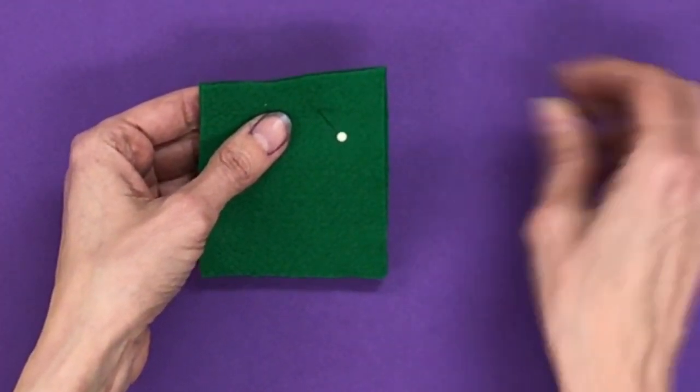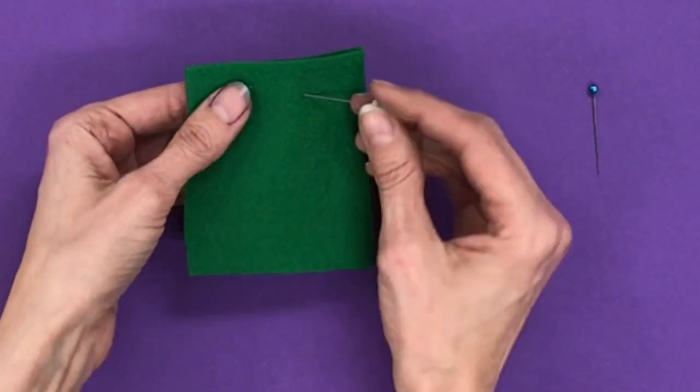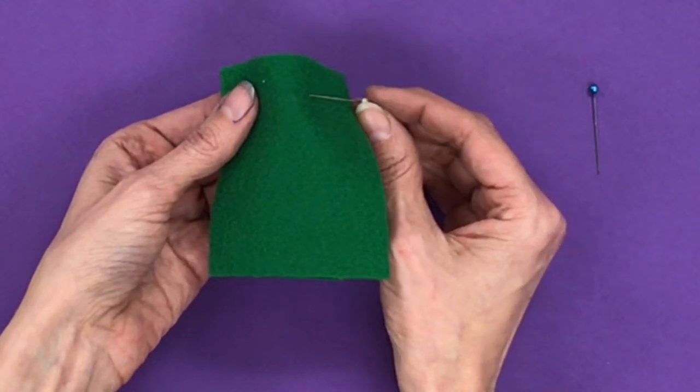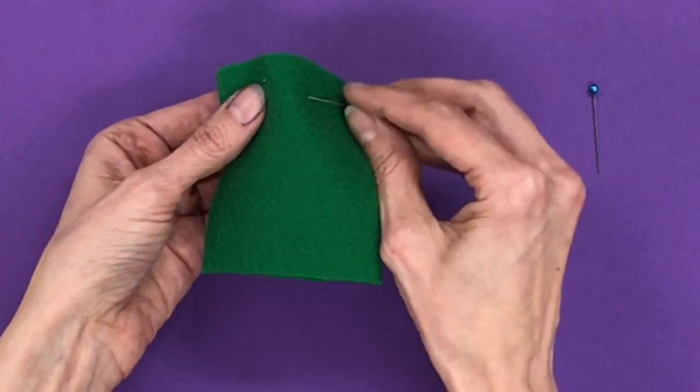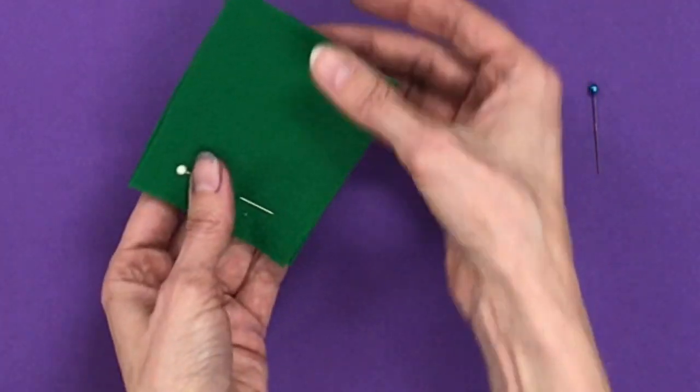You're going to take a pin, push it through both pieces of fabric, then lay the needle down as you bend the fabric to push the needle through. There. Now, both pieces of fabric are pinned together.